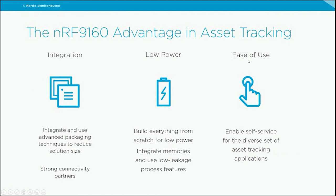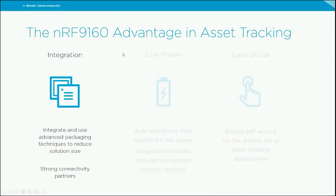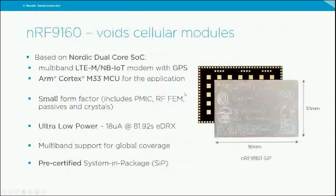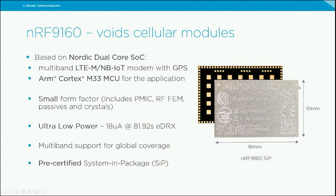Nordic has a business model focused on enabling anyone who wants to build a cellular product, following the same approach that's achieved 40% market share in Bluetooth Low Energy. The focus is on ease of use for a diverse set of asset tracking applications. The NRF9160 system-in-package includes the Nordic chipset with the modem and application processor, plus PMIC, RF front end, crystals, and passives — everything you need, requiring only decoupling capacitors and power connections.